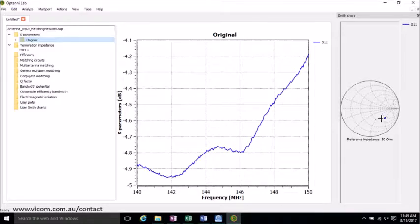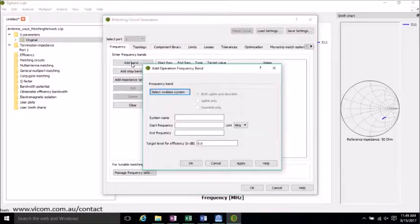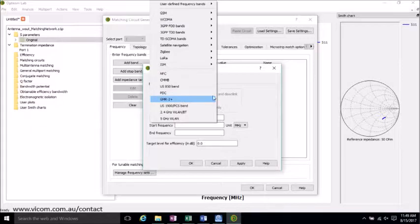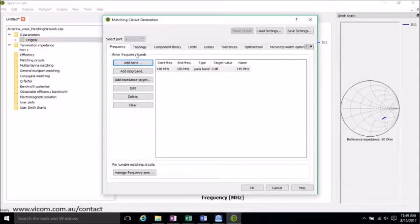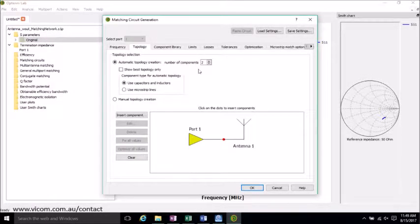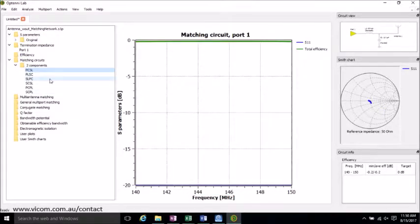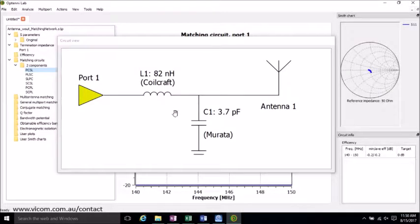So, you can see here we have our Smith chart on the right. And to generate a matching circuit, we go to Analyze and Matching Circuit Generation. Let's add a band. 145 MHz is our band. But you can also select the wireless system, depending on what you're using. And I'll use a 10 MHz span. Okay, and we'll check the topology. Two components is fine for us. You can have as many as 10. And for components, I'll be using the Coilcraft and Murata capacitors and inductors. Click OK. And there we go. It's generated a matching circuit. And you can see this uses a series inductor of 82 nH and a parallel capacitor of 3.7 pF.